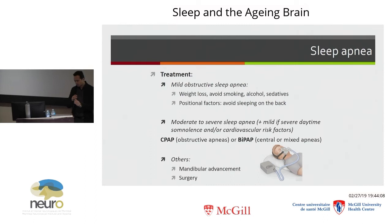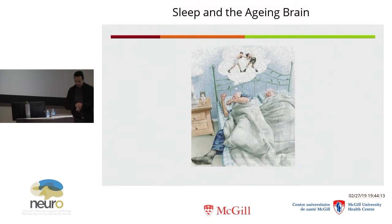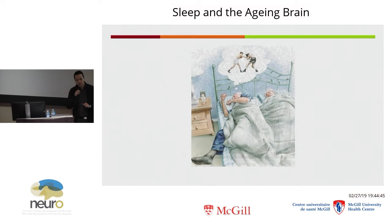Finally, let me talk about REM sleep behavior disorder, or RBD. This is a condition where the person acts out their dreams. For example, someone dreaming about a fight will actually punch and kick during the night. This is due to a loss of muscle atonia — normally, during REM sleep, systems in your brainstem keep your muscles paralyzed to prevent movement. People with RBD lose this system; the neurons responsible for muscle atonia in the pons and brainstem become less functional, so people act out their dreams.